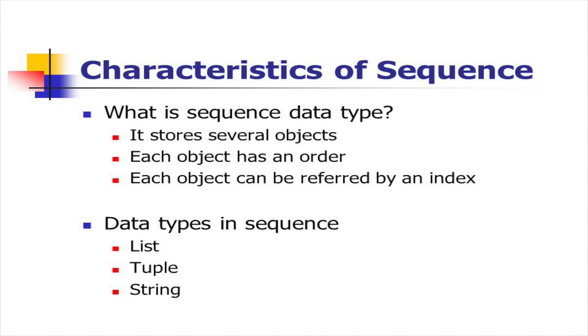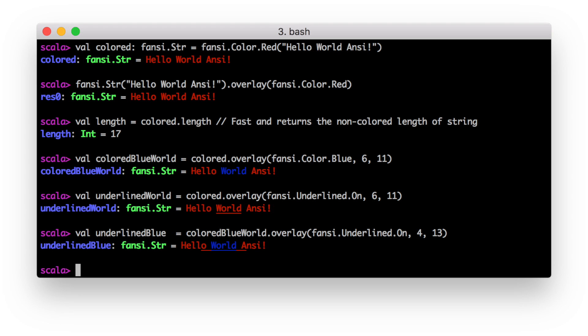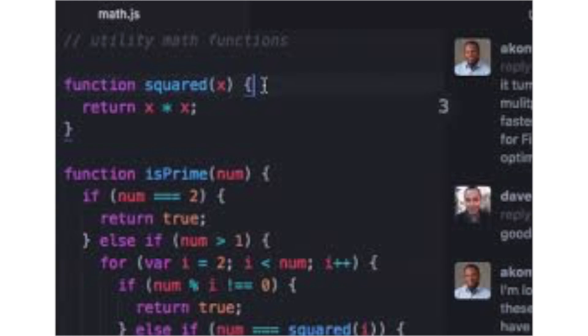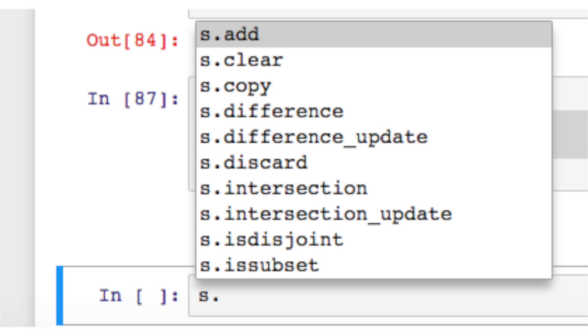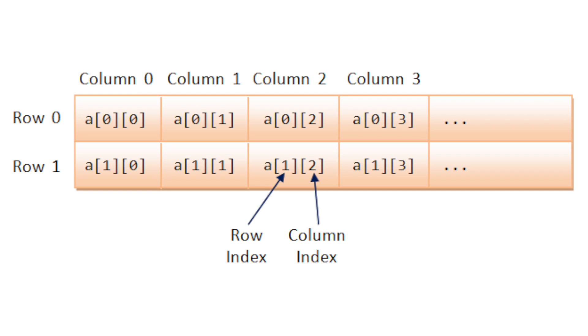Now that we have come to the end of this module, let us have a quick recap. The tuple data type is a sequence data type that cannot be modified, which offers optimization to your programs by being a somewhat faster type than lists for Python to process. When other developers collaborate with your code, use of tuples will convey that you do not intend for those sequences of values to be modified. In this module, we covered the basic features of tuples including indexing, slicing, concatenation, and some built-in functions. Thank you, see you in the next module.